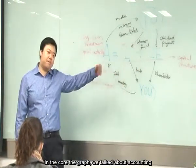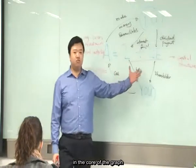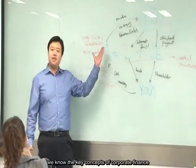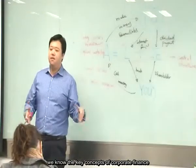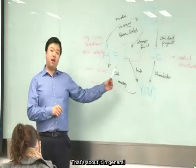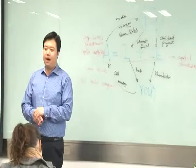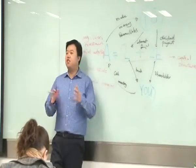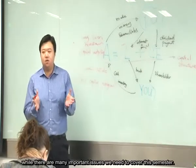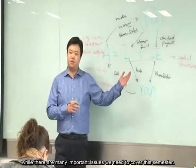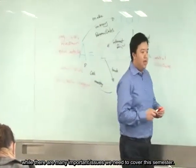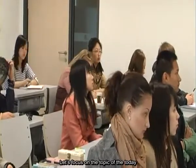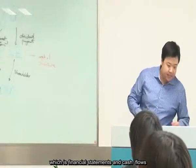In the core of this graph, we talk about accounting — how you finance your little shop or company. But outside this graph, we understand the key concepts of corporate finance. You can show this graph to your father and say: I need money to invest in this little shop. That's about accounting in general. We've studied accounting, we're going to study corporate finance, and that's the relationship. Today's topic focuses on financial statements and cash flows.